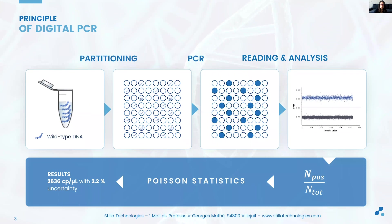In digital PCR, the workflow starts with the same reaction mix as for qPCR, containing the reagents necessary for the amplification reaction: the buffer solution, the dNTPs, the polymerase and its cofactors, the primers and probes, and the template under investigation, represented here by the blue sequence.